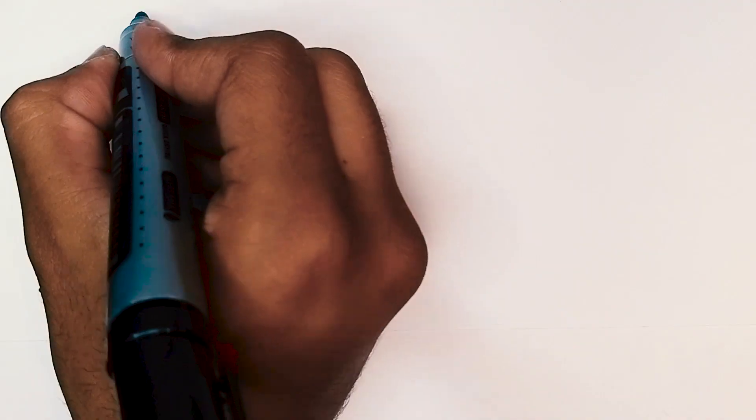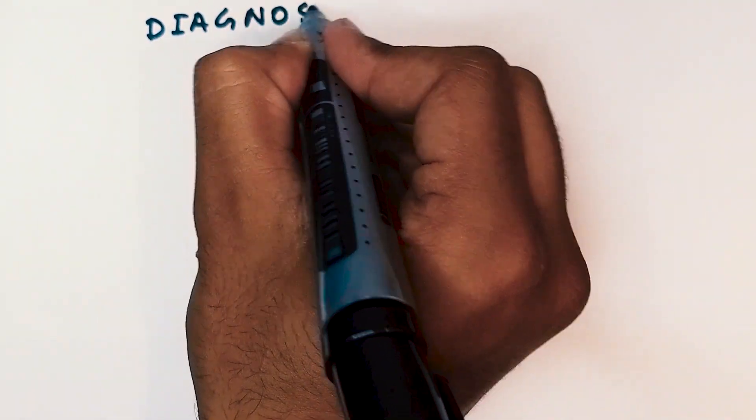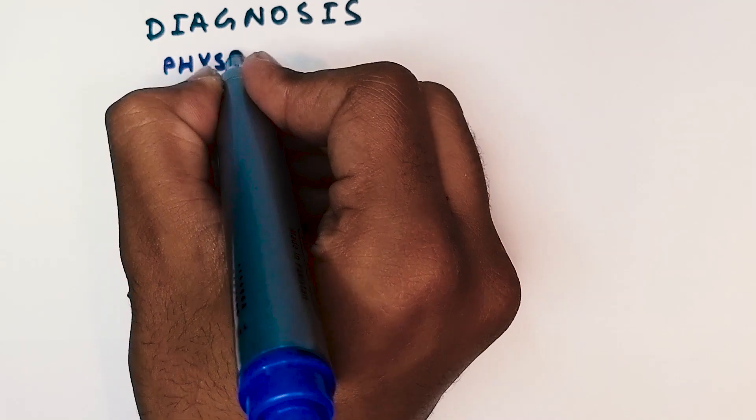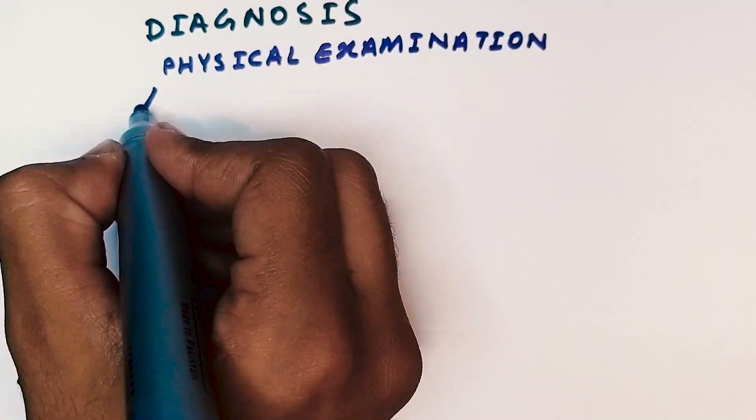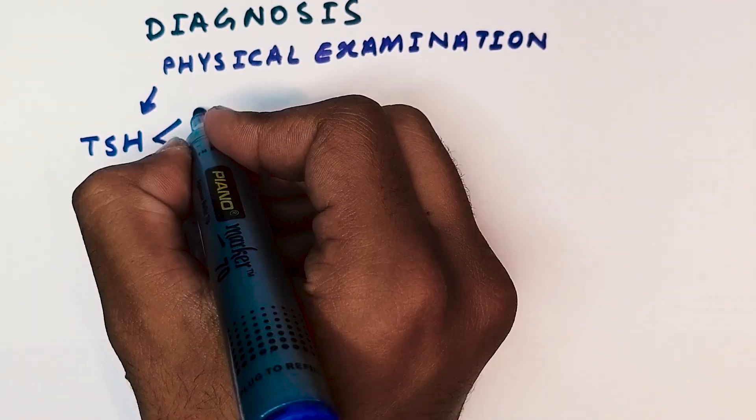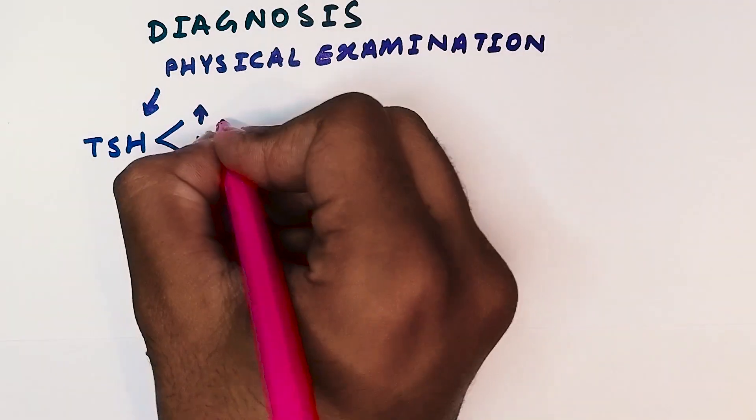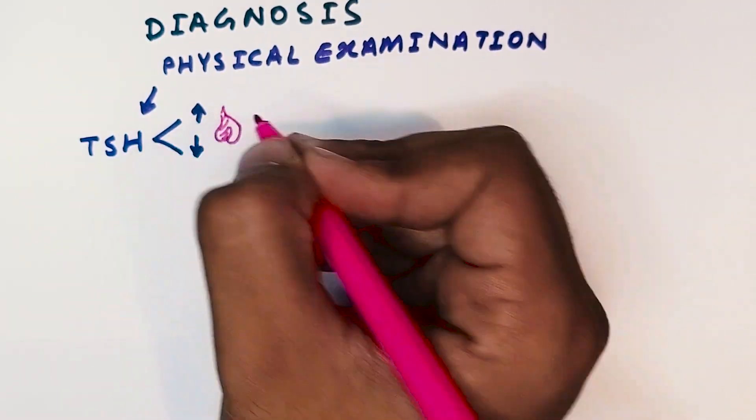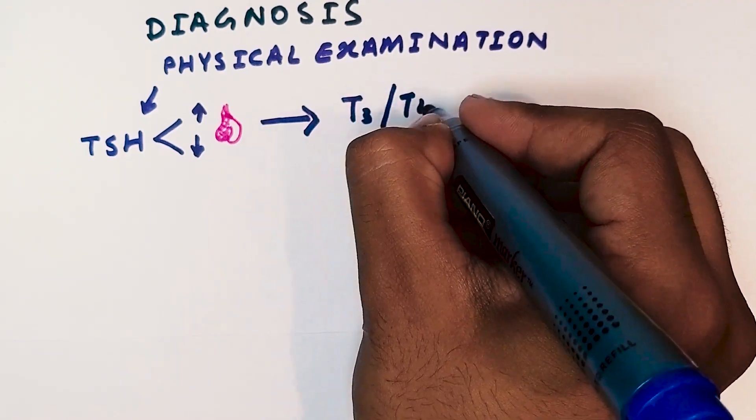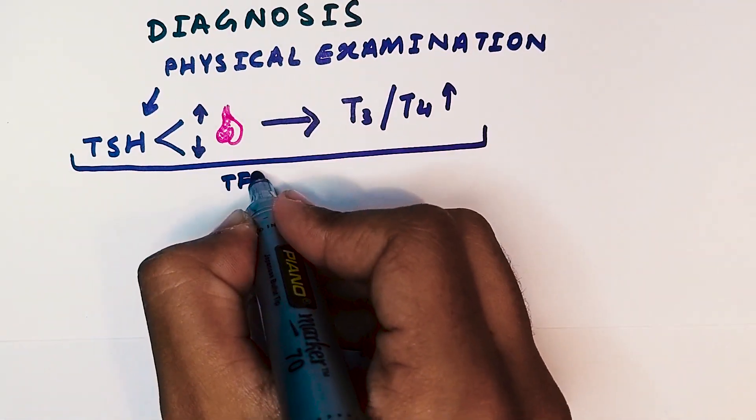To diagnose hyperthyroidism, healthcare professionals follow specific guidelines. First, they assess the patient's clinical symptoms and perform a physical examination. Then they measure the levels of thyroid-stimulating hormone, or TSH, in the blood. If the TSH levels are low, they confirm the diagnosis with free thyroxine, T4, and triiodothyronine, T3 levels.